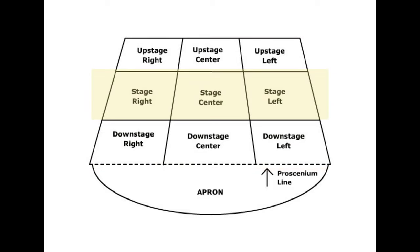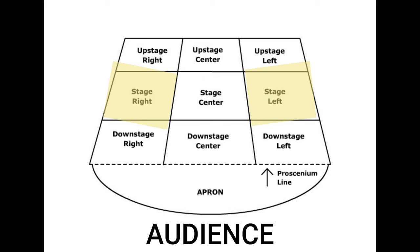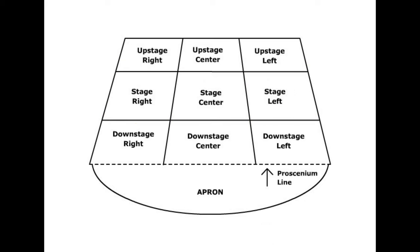And then you have center stage, which is obviously in between upstage and downstage. You also have stage left and stage right. Stage left and stage right are based on the actor's point of view, not the audience's. So if you're looking at a stage from the audience's point of view, stage left is going to be on your right and stage right is going to be on your left. To the actor's perspective, if you are standing on the stage, stage left will be your left and stage right will be your right.